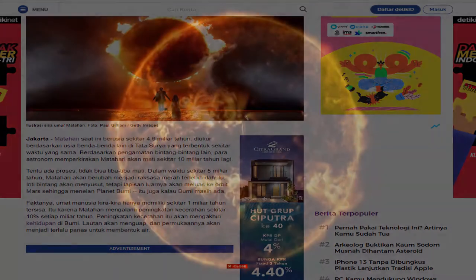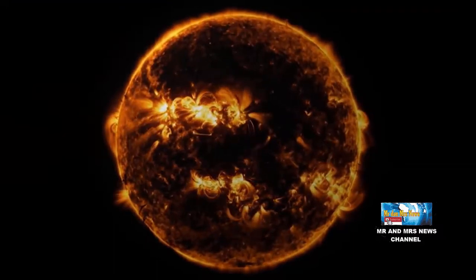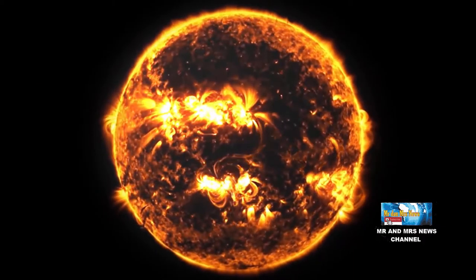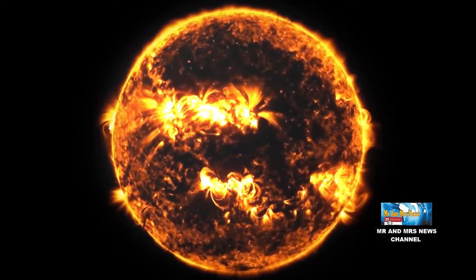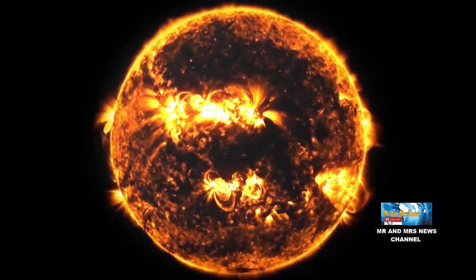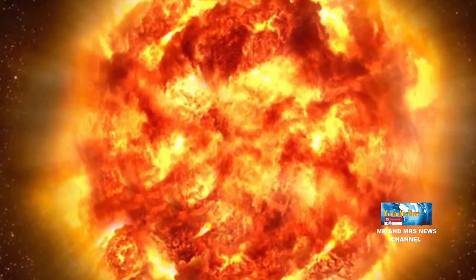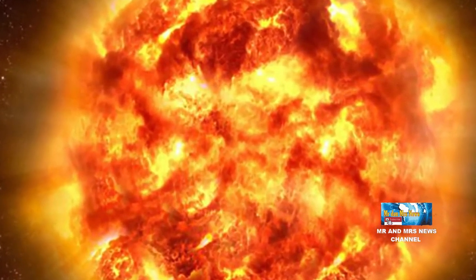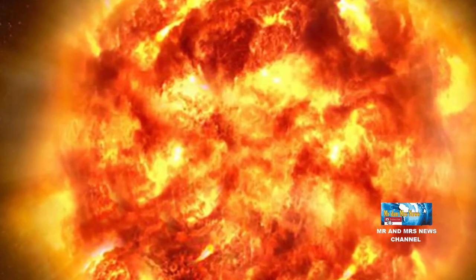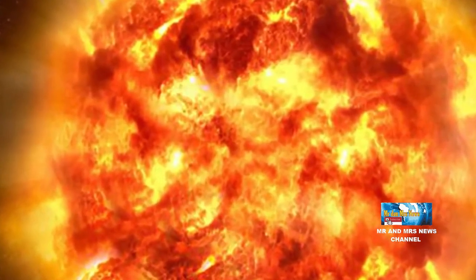Selama usia itu, akan ada yang terjadi. Dalam waktu 5 miliar tahun, diperkirakan matahari berubah menjadi raksasa merah. Inti matahari juga diperkirakan akan menyusut, namun bagian luarnya meluas hingga orbit Mars dan menelan bumi dalam proses. Dengan catatan, jika bumi masih ada saat itu.